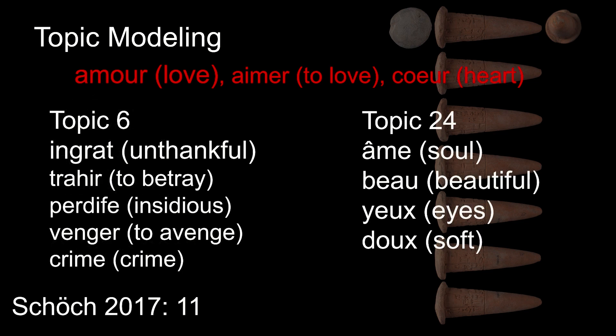Several topics also featured the words amour, aimer, and cour in the top keywords. Initially this may suggest a significant overlap in topics; however, when other keywords were also considered, it became apparent that these topics referred to very different kinds of love. Topic 6 portrays a jealous love linked to intensely negative emotions, while topic 24 refers to a love associated with a physically attractive appearance and beauty. It was later evident in the study that these love topics occur in different subgenres of the corpus.